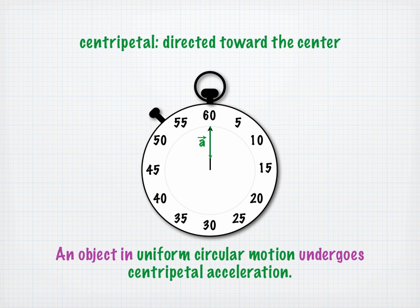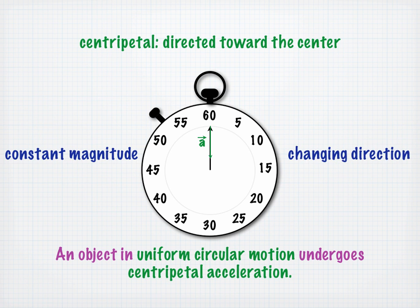For centripetal acceleration in uniform circular motion, the magnitude of the acceleration stays the same, but the direction constantly changes. Since the direction of the acceleration constantly changes, that means the acceleration vector is not constant for centripetal acceleration.